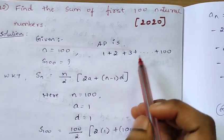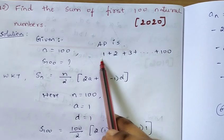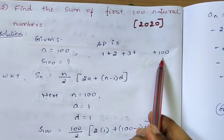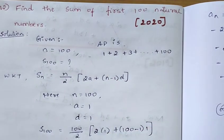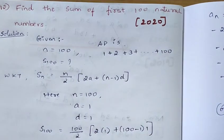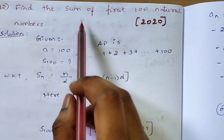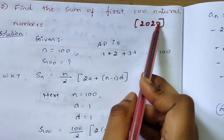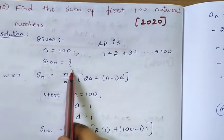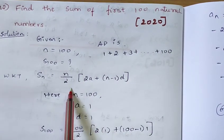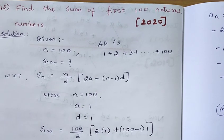The series is 1 plus 2 plus 3 plus so on plus 100. We need to find the sum of these 100 numbers, that is S100. We will identify the common difference. We know that Sn is equal to n by 2 into 2a plus n minus 1 into d.